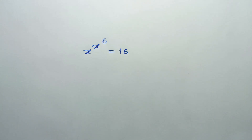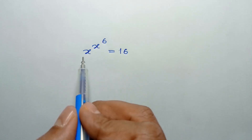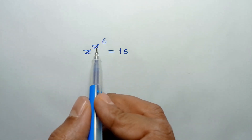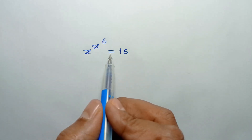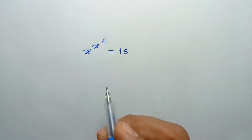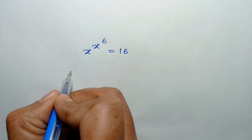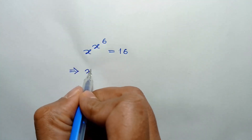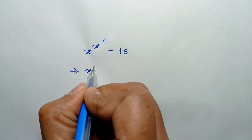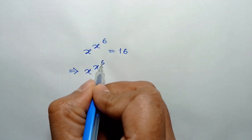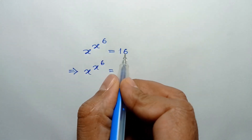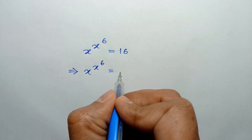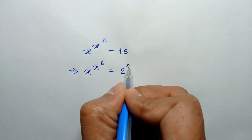Hi everyone. In this video I am going to show how to solve x to the power x to the power 6 is equal to 16. 16 can be written as 2 to the power 4.